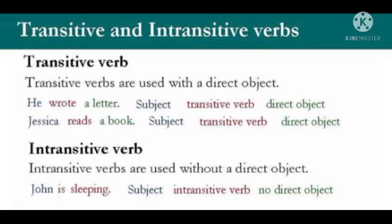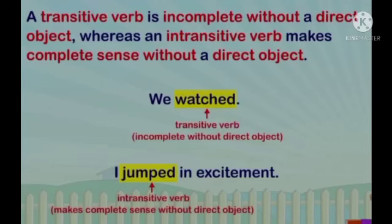Intransitive verb. Intransitive verbs are used without a direct object. Jismeh direct object hum use nahi karte hai. Jaisse, John is sleeping. Ismeh hume aur kuch object ke zhurt nahi pard rahe hai. Isi sehi pura sentence clear ho raha hai. John is sleeping. Thik hai? A transitive verb is incomplete without a direct object. Whereas, an intransitive verb makes complete sense without a direct object.